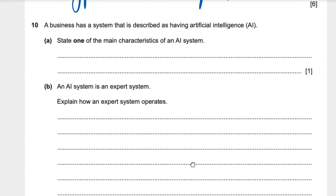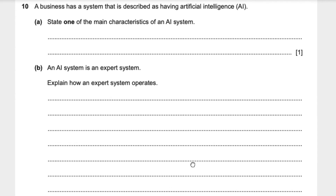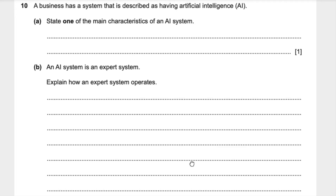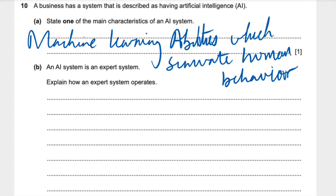Question 10: A business has a system that is described as having artificial intelligence. State one of the main characteristics of an AI system — for one mark. I'm going to put: it has machine learning abilities which simulate human behavior.